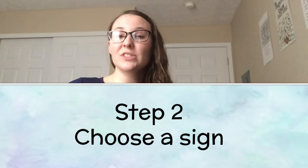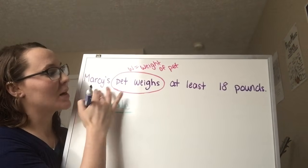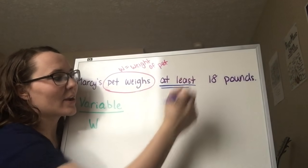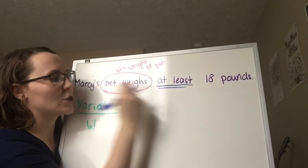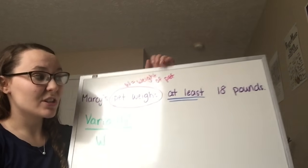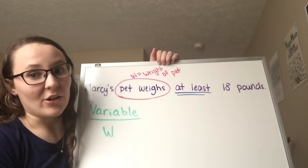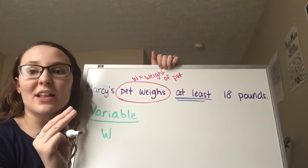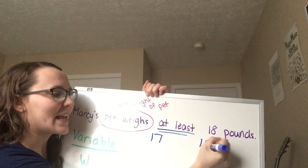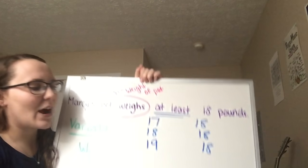Step two is to choose a sign. To figure out the sign we first have to find the keyword in this problem: Marcy's pet weighs at least 18 pounds. "At least" is going to be our keyword. Just because we found the keyword doesn't mean we're done finding the sign — now we have to determine what sign goes with "at least." What I like to do is plug in some fake values: a number below, a number equal to, and a number above. So I could do 17, 18, and 19 compared to 18.